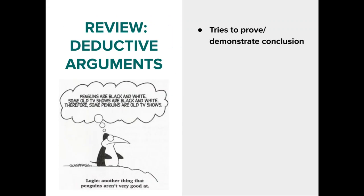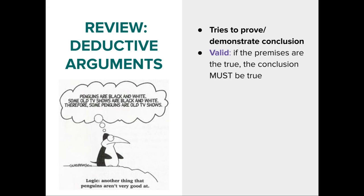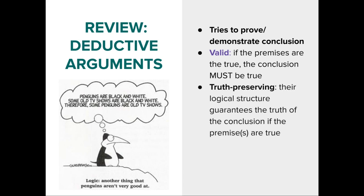To review deductive arguments: they try to prove or demonstrate their conclusion. They're only valid if, when the premises are true, the conclusion must also be true — meaning they're truth-preserving. If we have a deductively valid argument and the premises are actually true in the world, then our argument is sound.